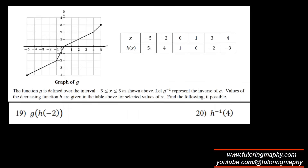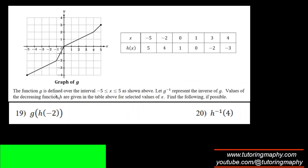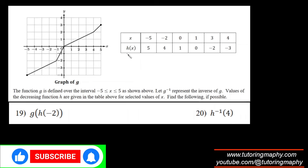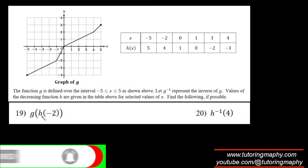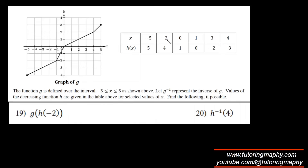Now we have a graph representing g and a table representing h, where g⁻¹ is the inverse of g and h is a decreasing function. For g(h(-2)): h(-2) is straightforward — when x = -2, h = 4. Then g(4): from the graph of g, when x = 4 the y-value is 2. So the answer is 2.